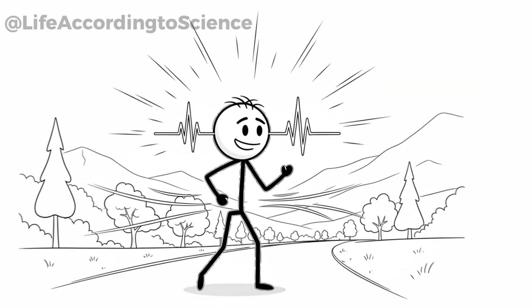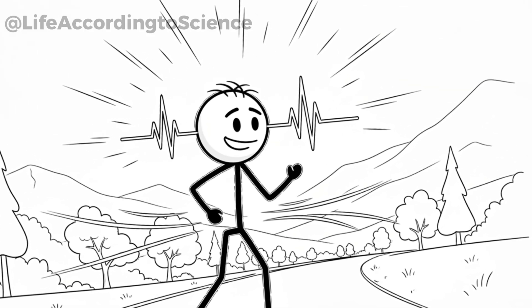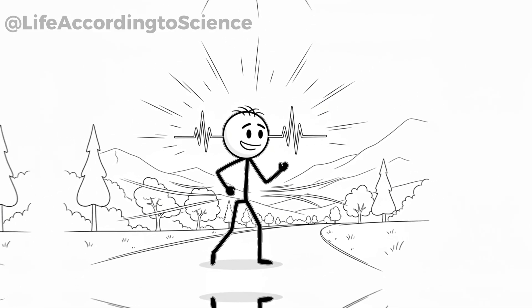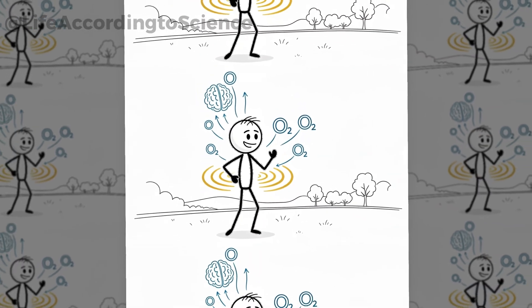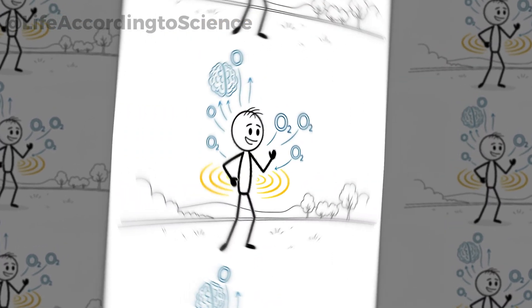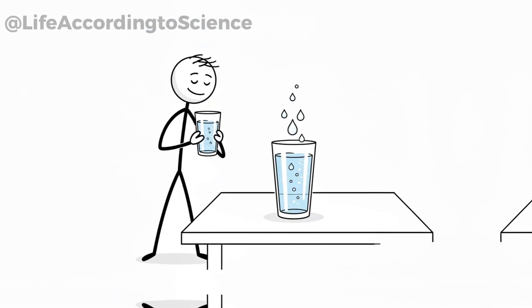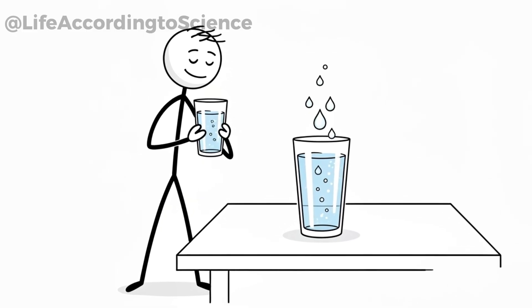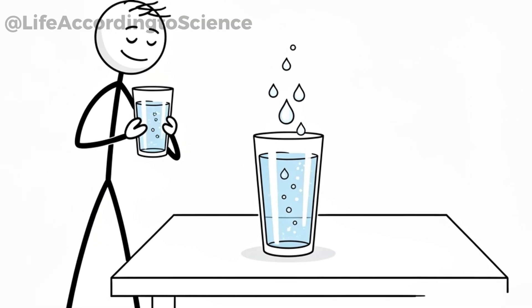Exercise is another powerful natural stimulant. Just 20 minutes of physical activity can increase circulation, oxygenate the brain, and release endorphins, effects that last longer and feel cleaner than a can of energy drink. Hydration is often overlooked. Many people feel fatigued not because they lack caffeine, but because they're slightly dehydrated. Water with a pinch of electrolytes can restore energy levels naturally.